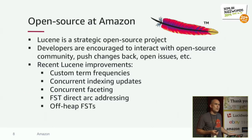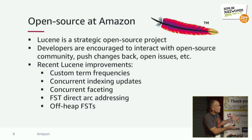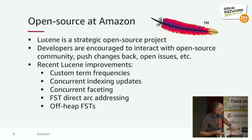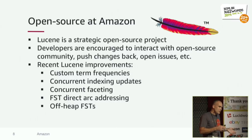Thinking back to Isabelle's keynote this morning — she mentioned that contributing back upstream depends on your situation at your company. That's what happened at Amazon too. Early on, as we built this search engine on Lucene, we hit rough corners, small bugs, and some performance issues. We pushed a lot of good stuff back upstream, which benefits the whole community — everyone using Lucene, Elasticsearch, and Solr. That's a healthy process. And less so lately because Lucene's working really well for us right now.